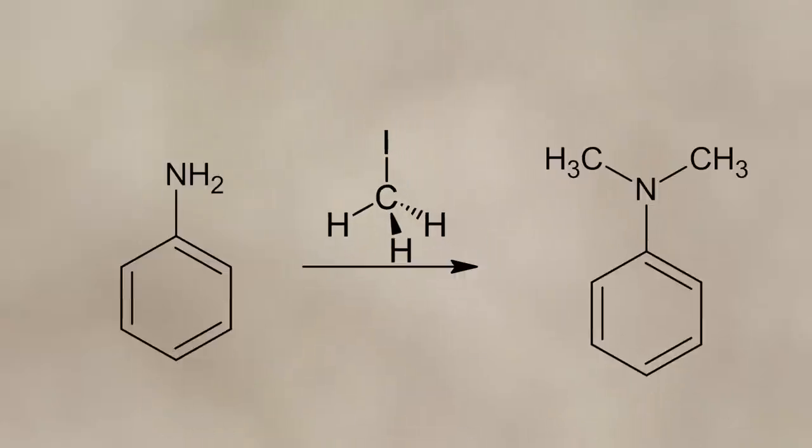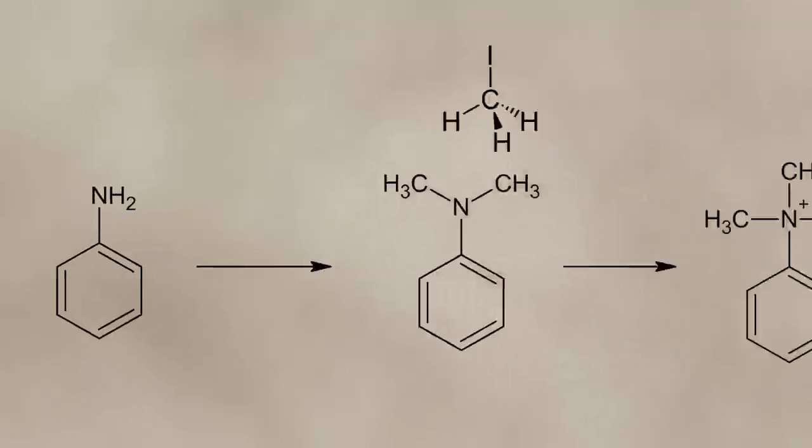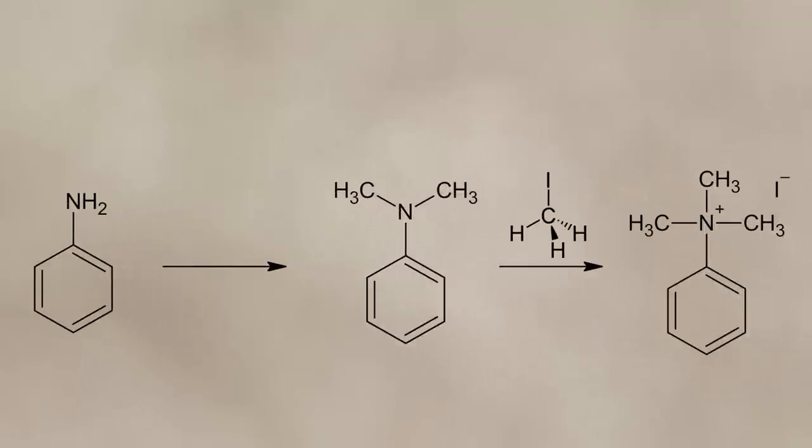At this point methyl iodide was my biggest hope for obtaining a methylated aniline, but it has the drawback that it isn't very selective in the formation of tertiary amines and also forms a lot of quaternary ammonium salts.